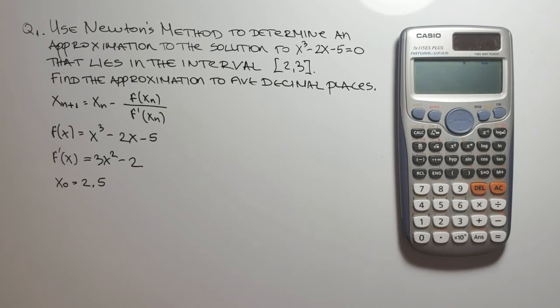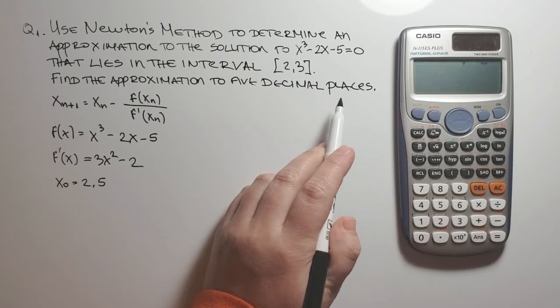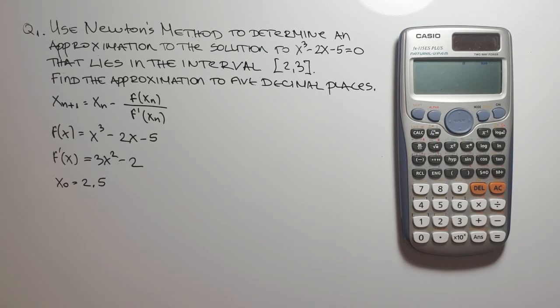The problem asks to find the approximation to five decimal places. At this point all we need to do is run through the Newton's method. We have our initial approximation x sub 0 equal to 2.5 and now we solve the next approximation x sub 1 by using the general formula.